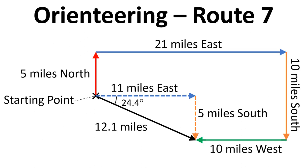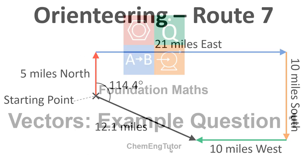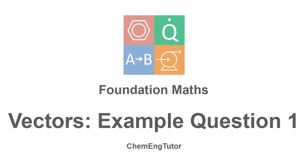Now if we put this back into the bigger picture, we can see that the angle of 24.4 degrees is the angle from east, but we want the angle from north. There's another 90 degrees here, so we have to add 90 onto 24.4, which gives us 114.4 degrees overall. So the answer is that we're 12.1 miles from the start, and the compass bearing from north is 114.4 degrees. That has answered the example question.